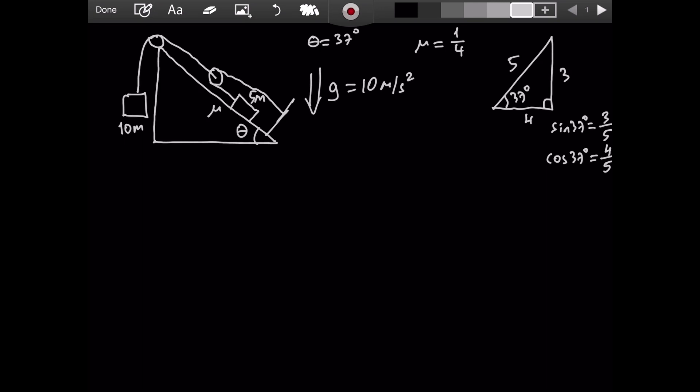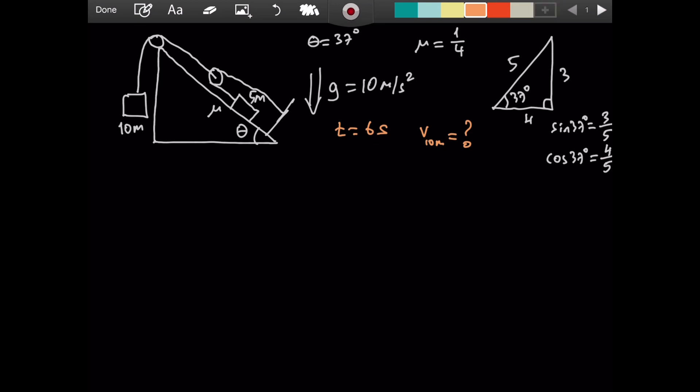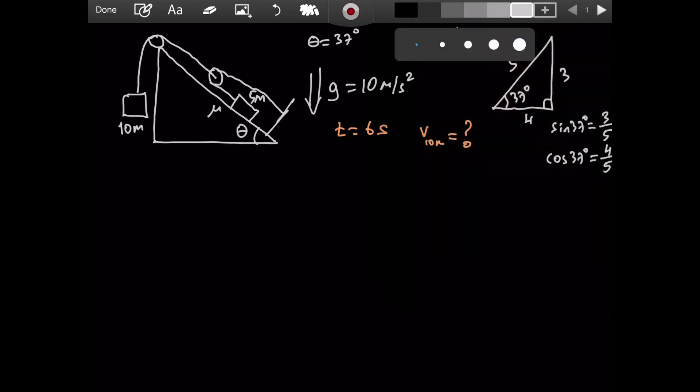Now the question is, this system is released from rest and after 6 seconds, so when t equals 6 seconds, what is the speed of the 10m mass? What is the speed of V10m when time is equal to 6 seconds? You can pause the video and give it a go. When you're ready, let's do it together. All right, I assume that you gave it a go and now you're ready to see the solution.